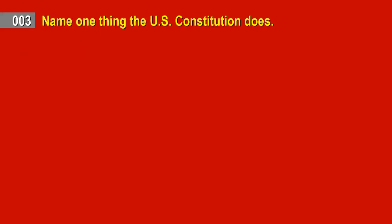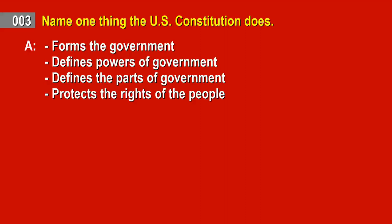Question 3. Name one thing the U.S. Constitution does. Answer: Forms the government. Defines powers of government. Defines the parts of government. Protects the rights of the people.